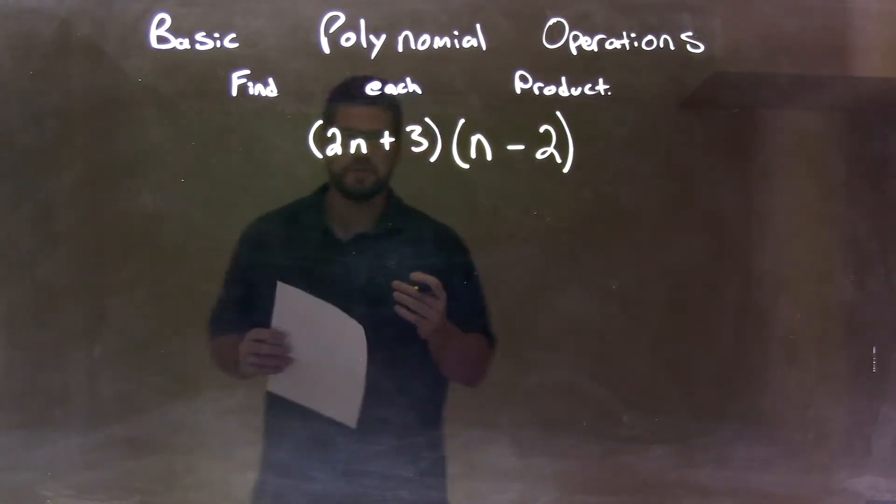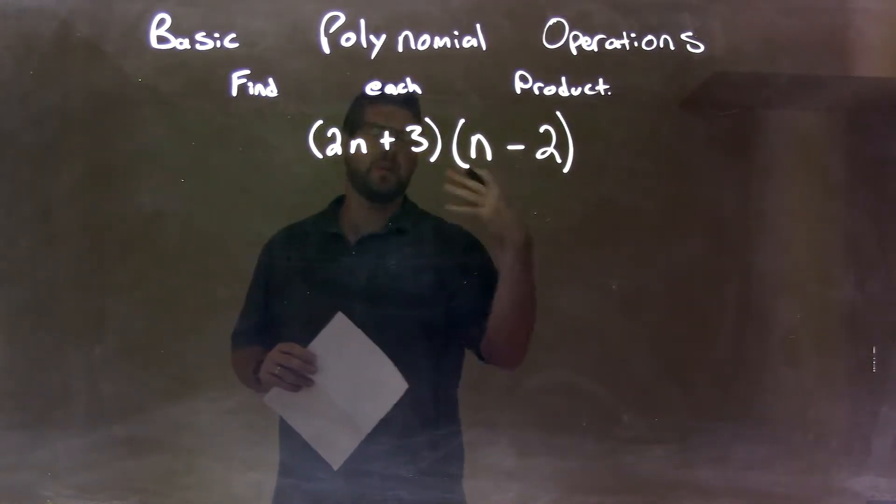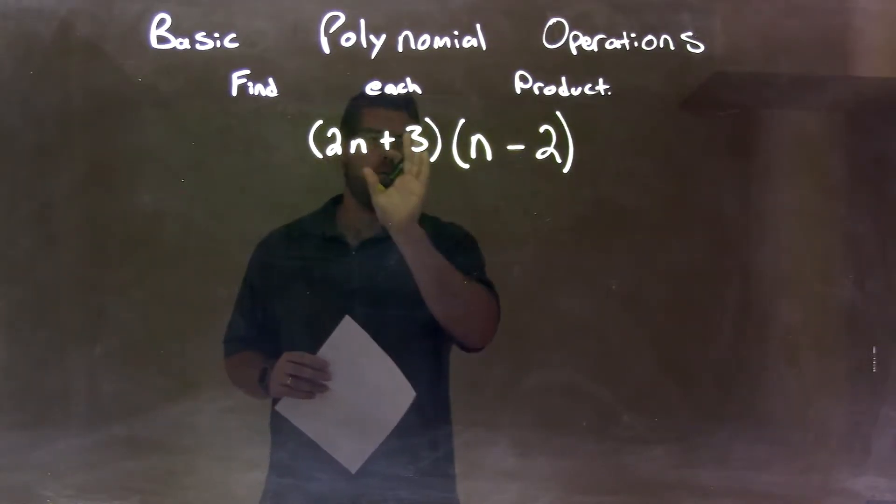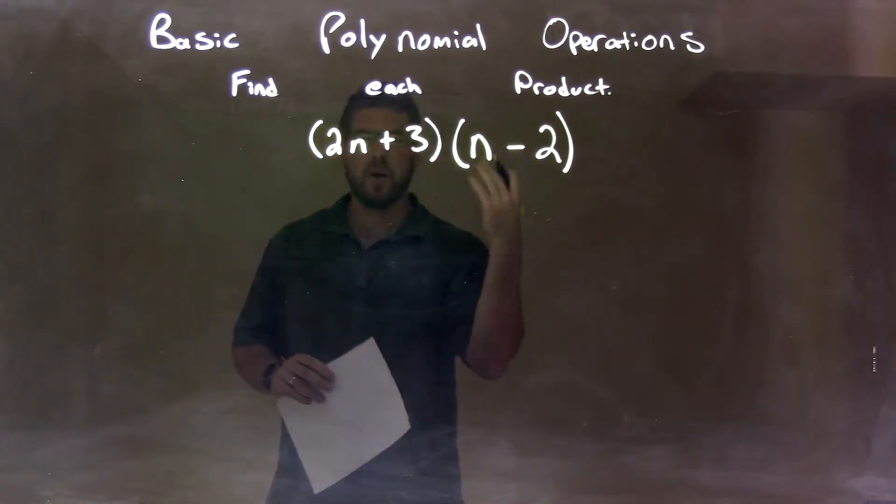What I'd like to do is first look within each parenthesis. Anything we can simplify? No. Now we take all parts of our first parenthesis and multiply it by all parts of our second parenthesis. So I draw arrows to do that.